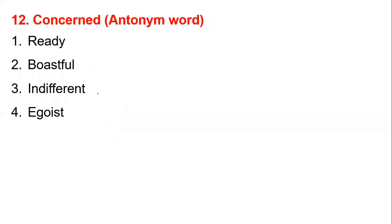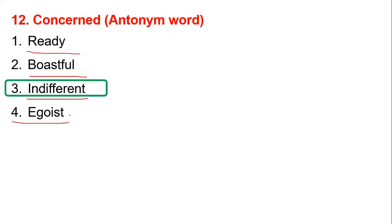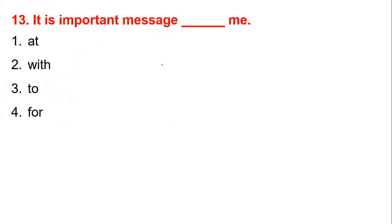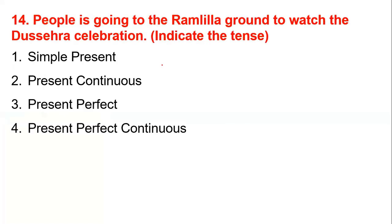Number twelve: 'cantankerous' — what does cantankerous mean? It means being anxious or worried about nothing, being irritable. Next, number fourteen: 'people is going to the Ramlila ground to watch the Dussehra celebration' — identify the tense.